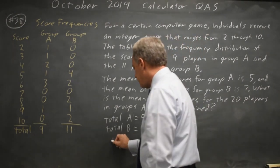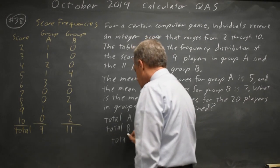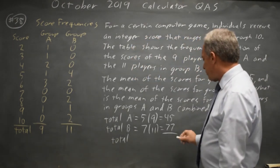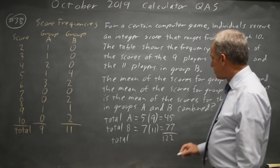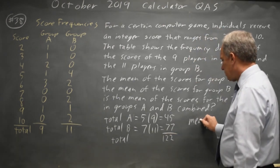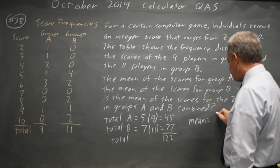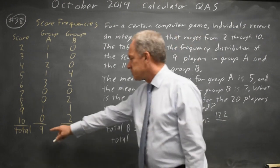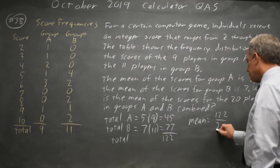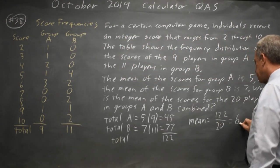So the total for A and B combined is 45 plus 77 is 122. And our mean is equal to that total 122 divided by the number of scores, which is nine plus 11 equals 20. And that is 6.1.